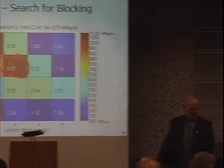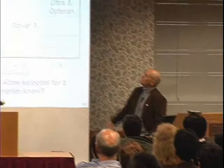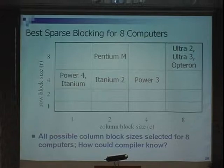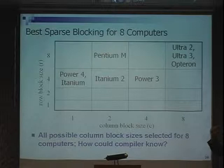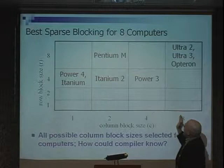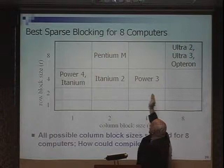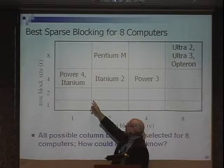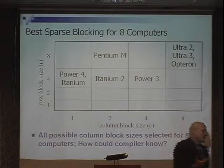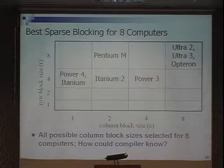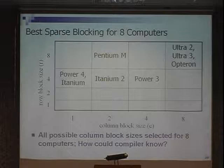Kathy Yelick and Jim Demmel did this research as part of the VBOC group. They looked at eight different computers and what was the best blocking. Across these eight computers, every single column size was the right answer for a different computer — actually five different ones were picked. Going from the IBM POWER3 to POWER4, it shifted quadrant from four-by-four to four-by-one. Itanium across generations went from four-by-one to four-by-two. How could the compiler figure that out? But if you put a little dynamic phase in it to do some investigation first, you can write the code, ship it, and Berkeley does do that.